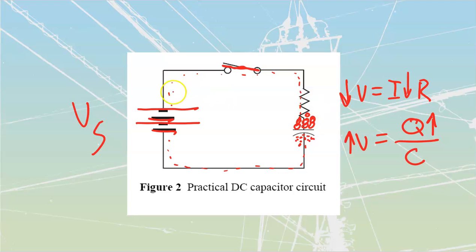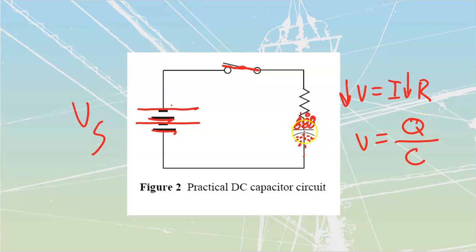We now have a circuit where Kirchhoff's law of voltage is still satisfied. There's no current flowing, but we have the full source voltage dropped across the capacitor because we have a full charge — all the coulombs stored on one plate and driven away from the other. Full voltage across the cap means zero volts across the resistor, since no more electrons are being pushed through it. All laws are satisfied.